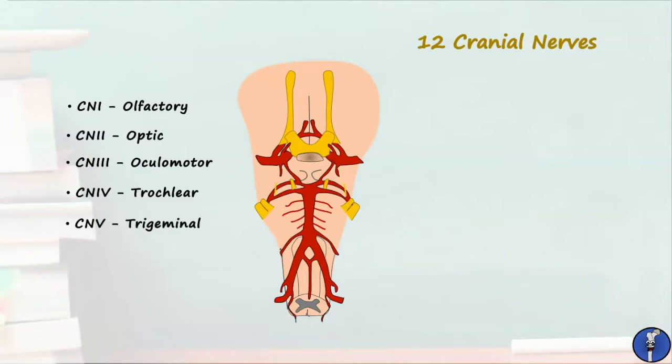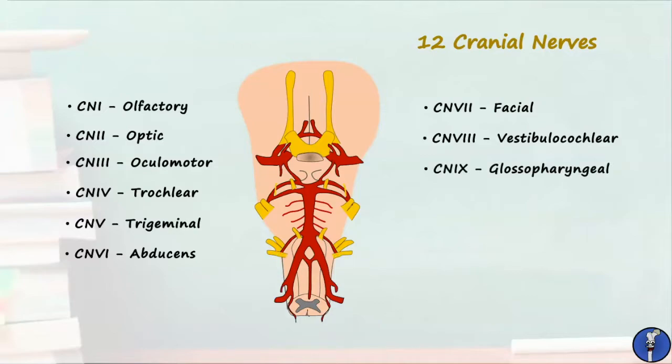The sixth, seventh and eighth cranial nerves correspond to the abducens, facial and vestibulocochlear nerves which come off at the pontomedullary junction of the brainstem. The ninth cranial nerve corresponds to the glossopharyngeal nerve and the tenth cranial nerve corresponds to the vagus nerve. The eleventh cranial nerve is the accessory nerve which has both cranial and spinal components.